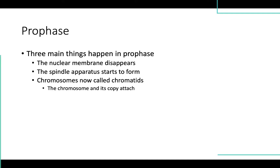Three main things happen in prophase, which is the first stage. First, the nuclear membrane disappears — it just disintegrates and is gone. The next thing is the spindle apparatus starts to form, where the two pairs of centrioles migrate to opposite ends of the cell, and microtubules line up in the shape of a football net. Then the chromosomes are now called chromatids. The chromosomes had duplicated, so the copies attach to each other and are called sister chromatids.